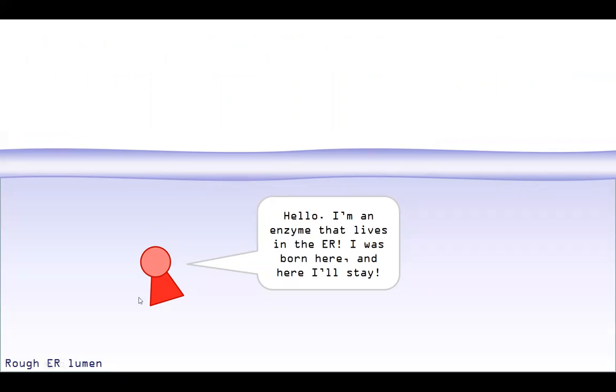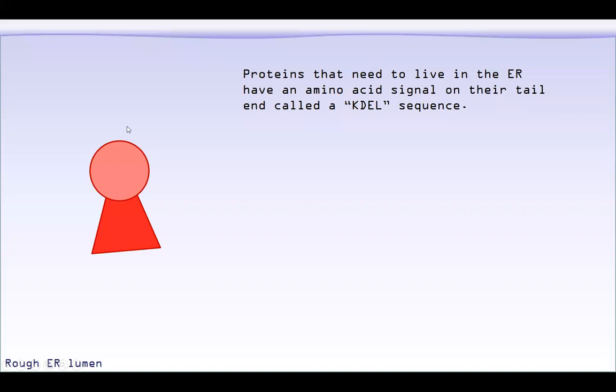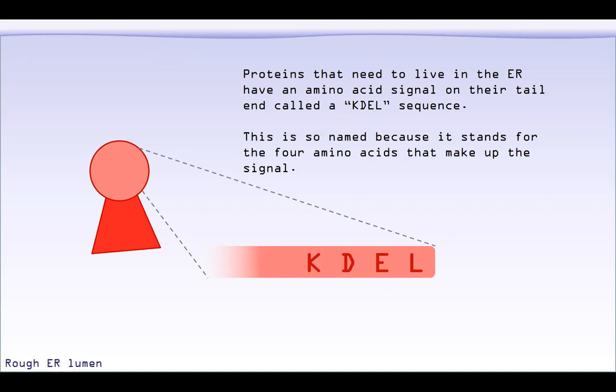We've seen this before. And this is an enzyme that's going to live in the ER. It wants to stay here. This is where it works and lives. Proteins that need to live in the ER have an amino acid signal on their tail end that we call KDEL. So somewhere on the tail end, we call this the KDEL sequence. And it is so named because these are the abbreviations for the amino acids that make it up. So lysine, aspartic acid, glutamic acid, leucine. So this is our KDEL sequence. And again, to contrast this with our mannose six phosphate signal, this is actually embedded as part of the protein. It's part of the amino acid sequence.